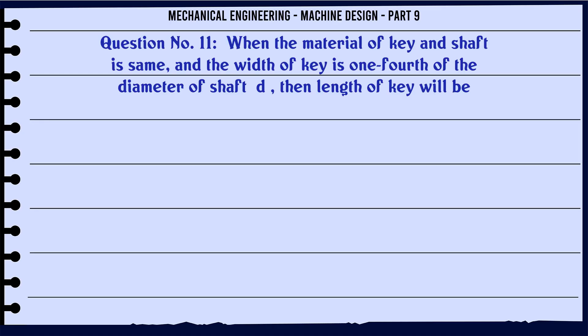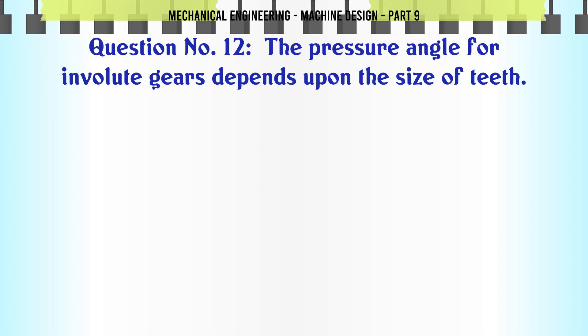When the material of key and shaft is same and the width of key is one-fourth of the diameter of shaft d, then length of key will be: A. 0.8d, B. 1.2d, C. 1.57d, D. 1.8d. The correct answer is 1.57d.